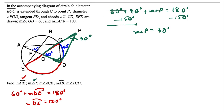Now we want to find the measure of angle ACE. The nicest way to go forward is that we already found arc DE is 120 degrees, which means the central angle EOD is 120 degrees. In geometry, angles formed by intersecting lines make vertical angles which are congruent, so we can also say that this angle here is 120 degrees.